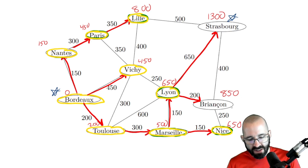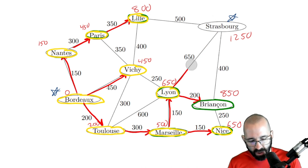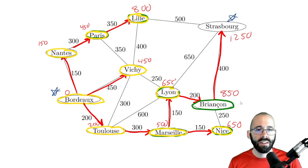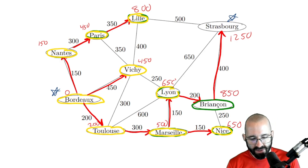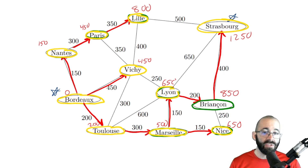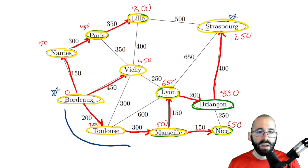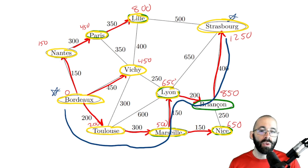The only unvisited node left is Briançon. Adding 850 plus 400 gives 1250 for Strasburg — that's faster. We get rid of the old path and add the new one. Every node is now visited — we're done! We've found not only the shortest path between Bordeaux and Strasburg, but the shortest path between Bordeaux and every city on the map.